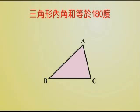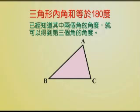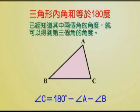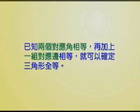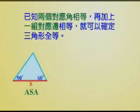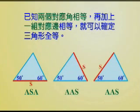而且我们知道三角形内角和等于180度。如果知道角A和角B的度数，那么角C就会等于180度－角A－角B。所以当两个三角形已经知道它们有两个对应角相同的时候，那么它们第三个对应角也会相等。再加上一组对应边相等，就可以确定三角形全等。所以ASA和AAS这两个都是让两个三角形全等的性质哦。